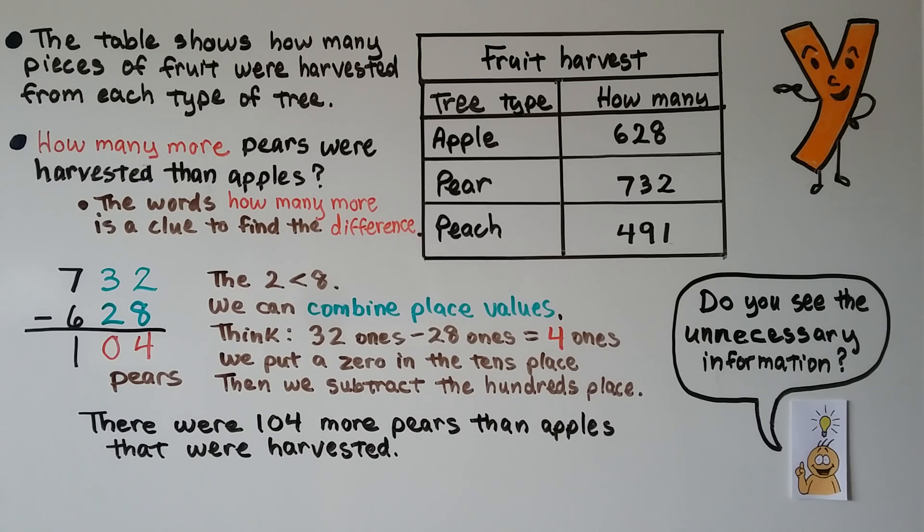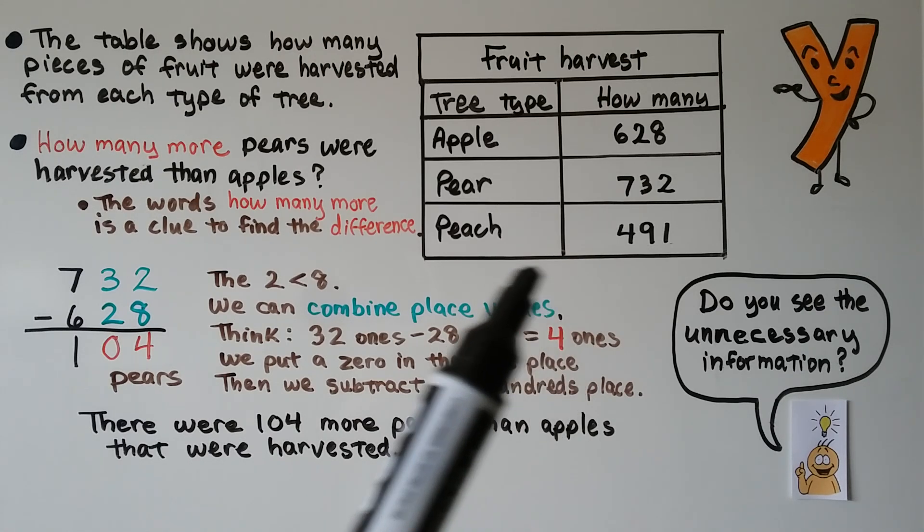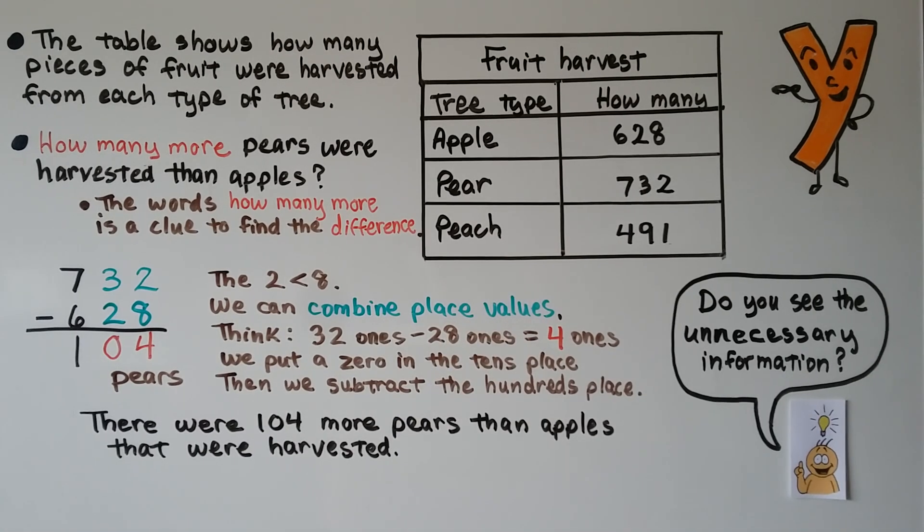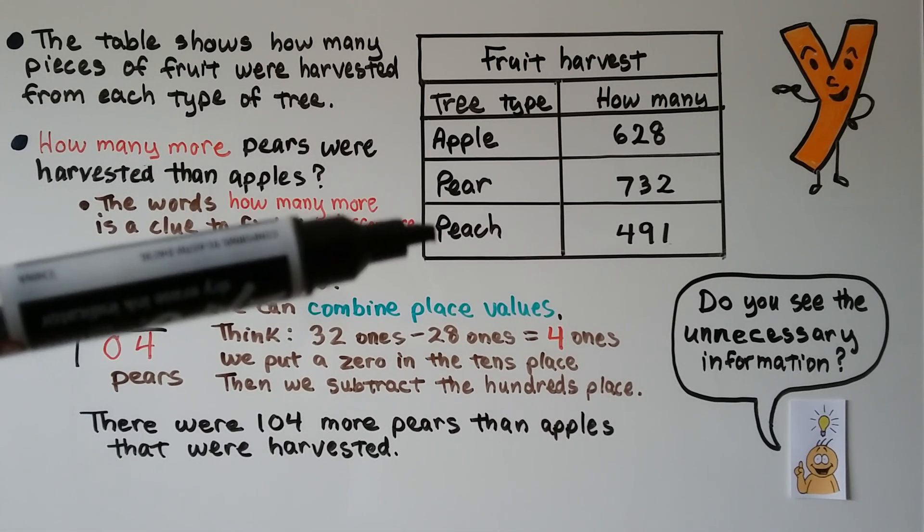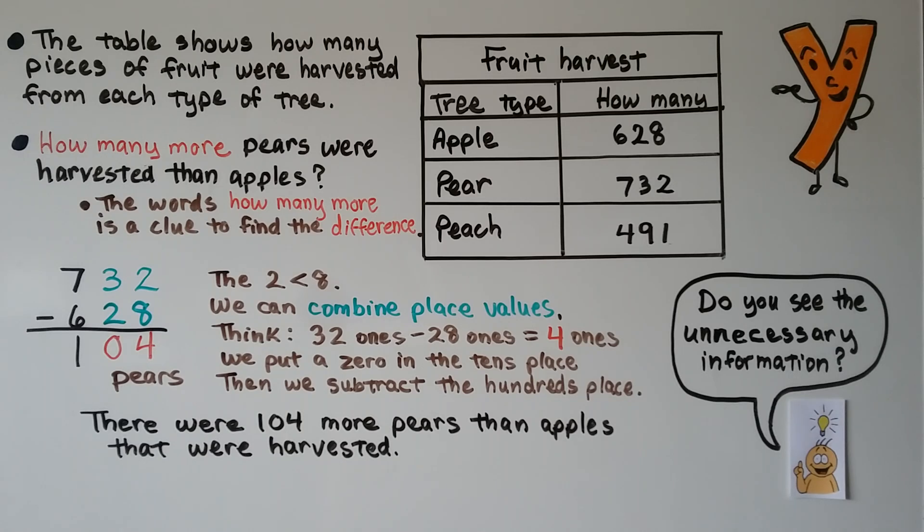Now, do you see the unnecessary information in the table? What information in this table was not needed? Well, if you said how many peaches were picked, harvested, you're right. Because our question didn't even ask about peaches, did it? So that was the unnecessary information.